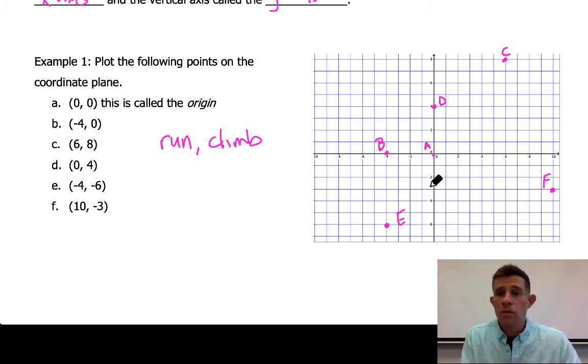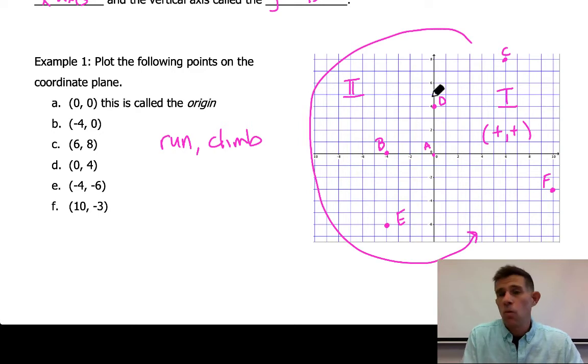Now the coordinate plane is broken up into four quadrants. We always number these quadrants here using these Roman numerals. And quadrant 1 is the upper right hand corner. And this is also known as the positive, positive quadrant because all x values and y values will be positive. Now next to the left here, we're going in this counterclockwise rotation, is going to be quadrant 2. And this is known as the negative positive because my x values will be negative and my y values will be positive.